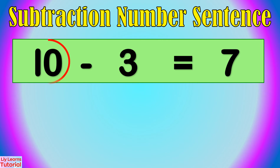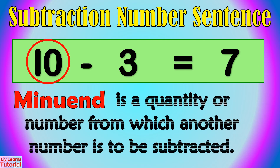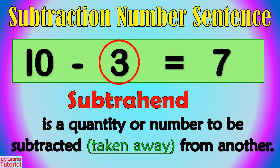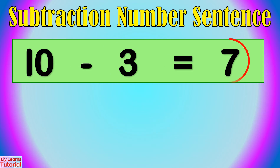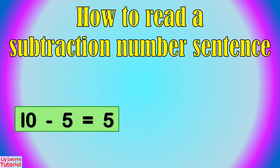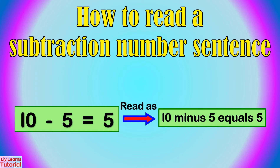This is the minuend. Minuend is the quantity or number from which another number is to be subtracted. Subtrahend is the quantity or number to be subtracted — taken away from another. The answer in subtraction is called the difference. A subtraction number sentence like the example below is read as 10 minus 5 equals 5.